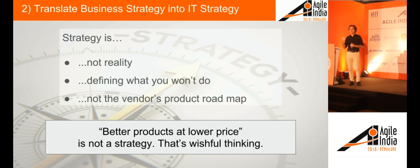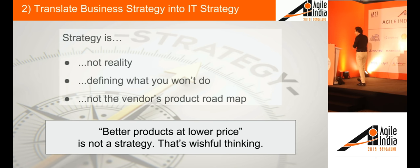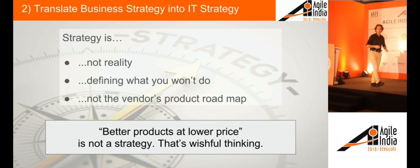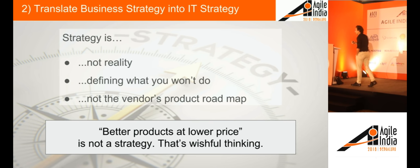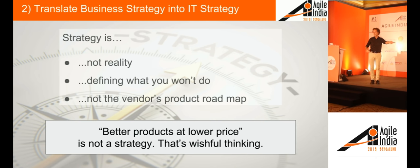Some very smart people coined the quote: strategy is what you're not doing. Faster, better, cheaper is wishful thinking — that is not a strategy. Strategy is focus, and focus includes excluding things. Large enterprises are also very much influenced by vendors, because they're generally buy-over-build type organizations. What can easily happen is that the vendor's product roadmap starts acting as a proxy for your IT strategy. That is very dangerous, because that is the strategy for the vendor, not for your business. They don't know what's best for you and they have a very specific view on your business from the product they sell.